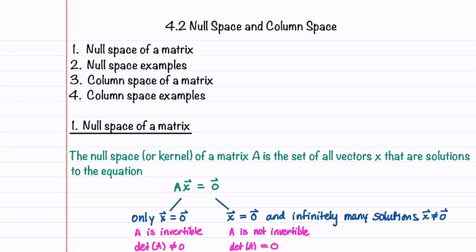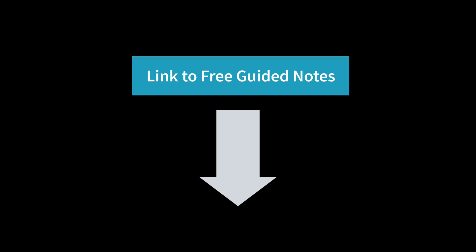Welcome to Understand the Math. This video is part of a series of videos on linear algebra and its applications, and covers section 4.2 on the null space and column space of a matrix. I'll teach you what a null space is, what a column space is, and walk through typical example problems for both of these subspaces. Be sure to check out the link below for free guided notes that you can highlight and fill in as you watch this video.